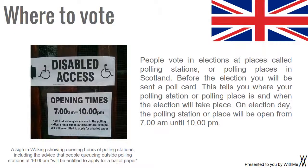Where to Vote: People vote in elections at places called polling stations, or polling places in Scotland. Before the election you will be sent a poll card. This tells you where your polling station or polling place is, and when the election will take place. On election day, the polling station or place will be open from 7am until 10pm.